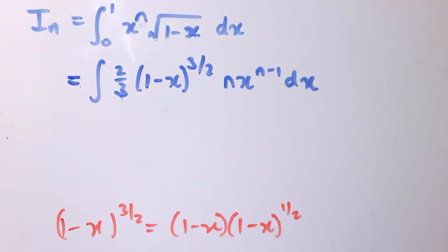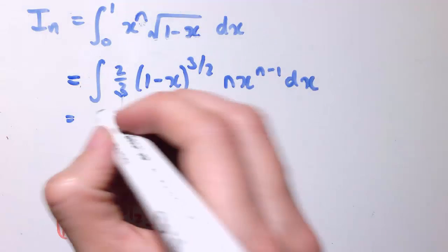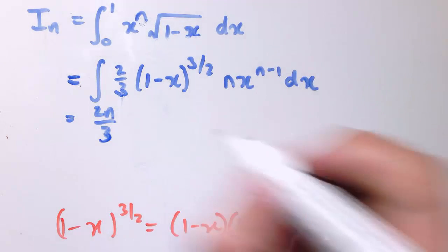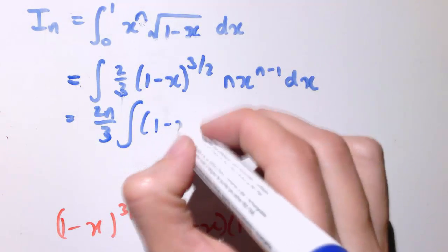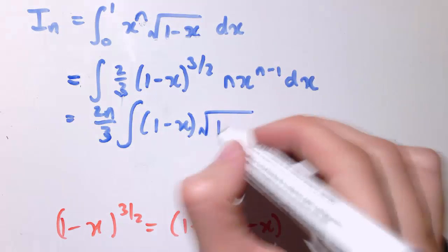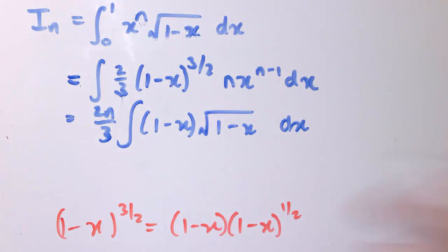And that 1 minus x to the 1 half then is a bit like this. So let's do that, and let me pull the 2 thirds and the n out of the integral, so I've got 2n over 3, and then this thing here will replace with this. So it's 1 minus x times 1 minus x to the 1 half, so let me write that as root 1 minus x dx, all times x to the n minus 1 as well.